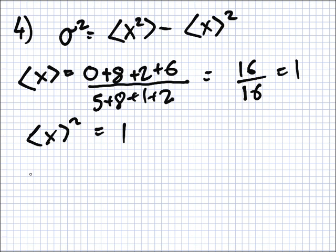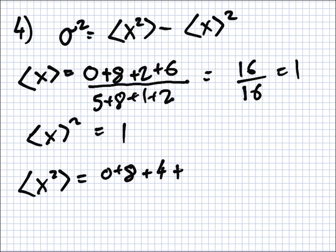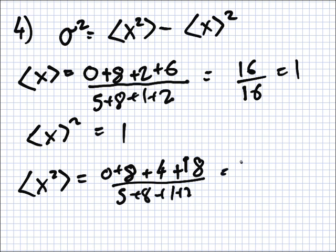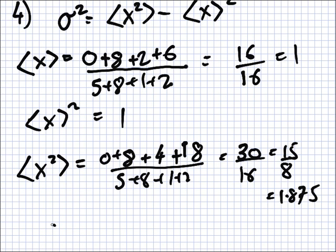The mean is one. Now to get this part, you square the values and multiply by the frequency. So: zero squared times five, plus one squared times eight, plus two squared times one, plus three squared times two — that's 18 — all over five plus eight plus one plus two, which is 30 over 16, which is 15 over 8, or 1.875.